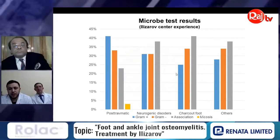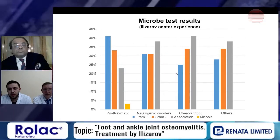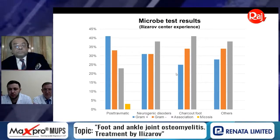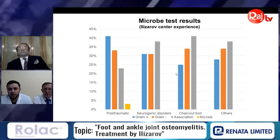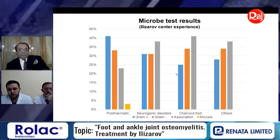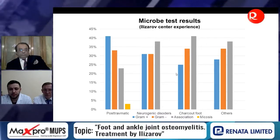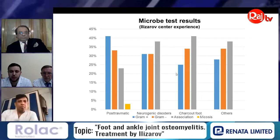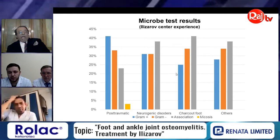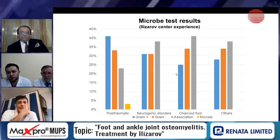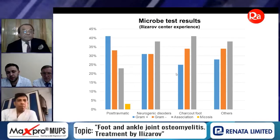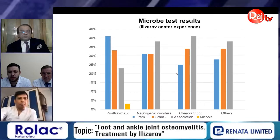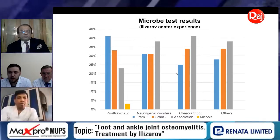In this slide you can see the types of microbes — gram positive and gram negative — in different etiological groups of infection. For example, in post-traumatic groups we very often find gram positive infection, while in Charcot foot cases we very often find microbial associations or gram negative infection.